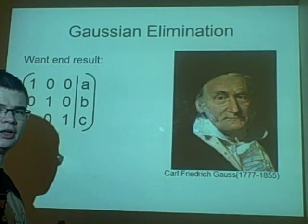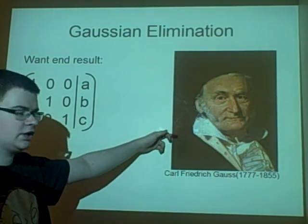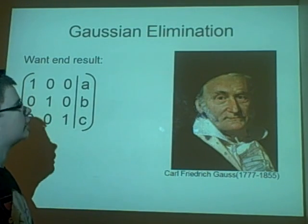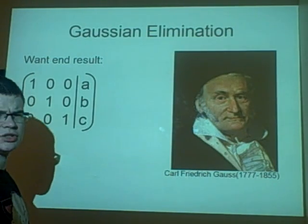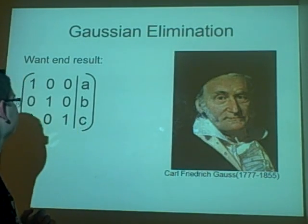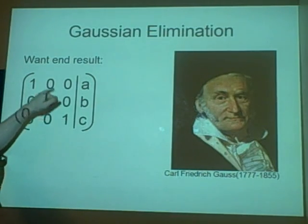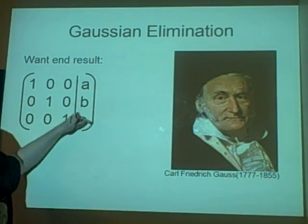And now the Gaussian elimination. This was made from Carl Friedrich Gauss, and it's a very long-winded way of doing simultaneous equations, but I imagine it'll give you a lot of marks in the exams. We want an end result after doing his method of 1, 1, 1, all the rest zeros, A, B, C.